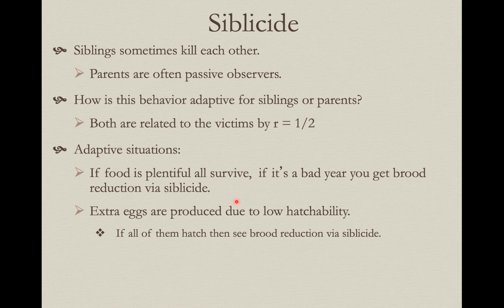If occasionally all the eggs hatch when you counted on one not to, you again need a mechanism for brood reduction to get back to an optimal clutch size matching the resource levels. These are species that tend to have asynchronous hatching, so the youngest individual — if all of them hatch — is easiest to remove through sibilicide.